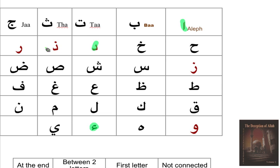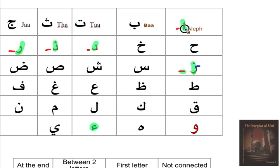We are going to have four letters which don't accept any connection from the left at all. Those always have to be free from the left side — remember, there is no connection from the left side. I'm putting a red line so you know this side is not connected. However, you can connect them from the right — no problem.